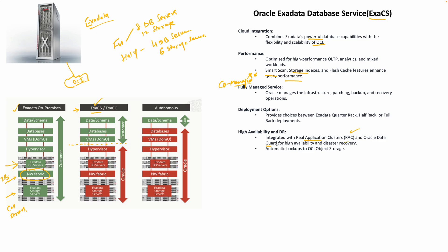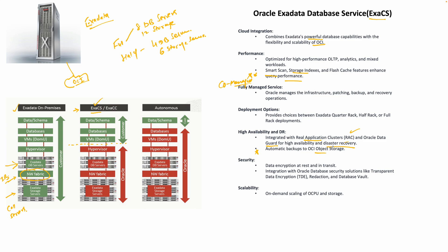ExaCS is integrated with Real Application Clusters (RAC) for high availability. You can also use Data Guard for high availability and disaster recovery. It has automatic backups to OCI Object Storage, similar to the Base Database Service. Any Oracle database running on OCI has encryption enabled by default - TDE comes out of the box at no extra cost, along with integration with Oracle security solutions like Transparent Data Encryption, Redaction, and Database Vault. With on-demand scaling, you can enable or reduce OCPUs as demand changes - billing is directly tied to enabled OCPUs.